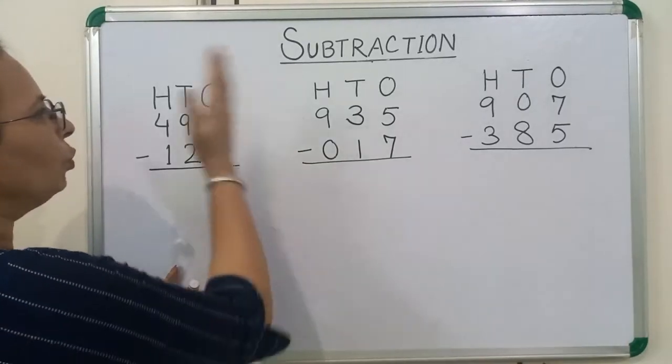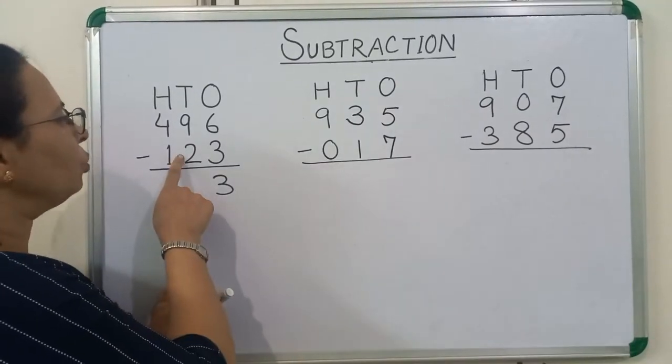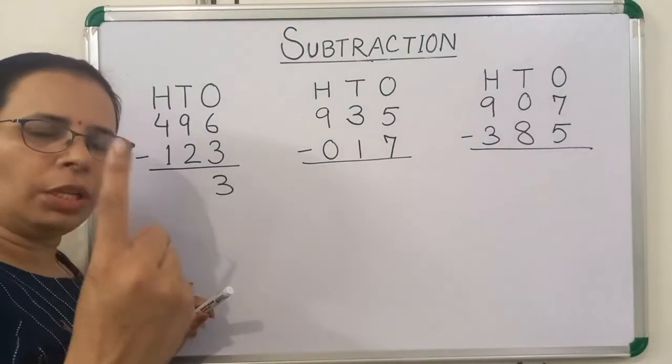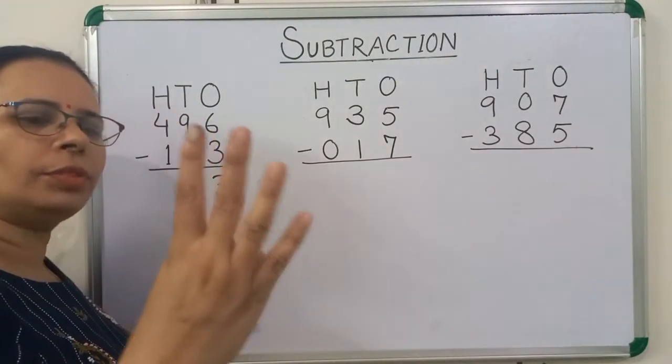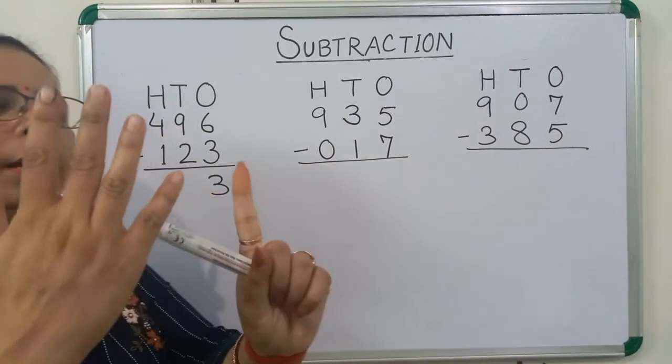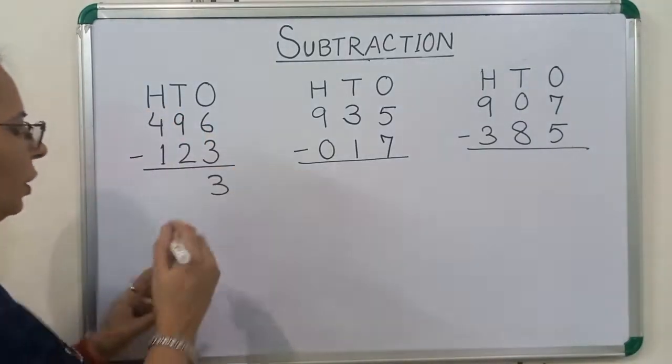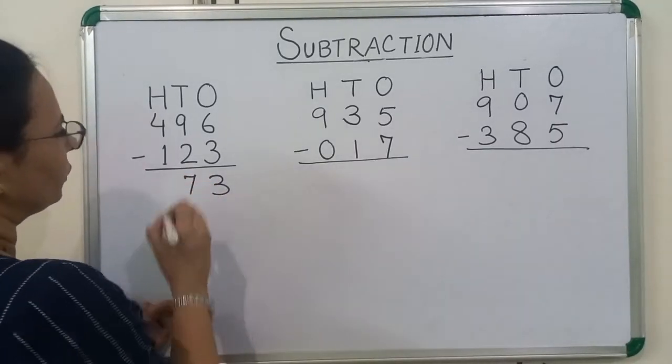Now we will move on to tens place number. We will subtract 2 from 9. Start counting after 2. 3, 4, 5, 6, 7, 8, 9. How many fingers are out? 7. So we will write here 7.